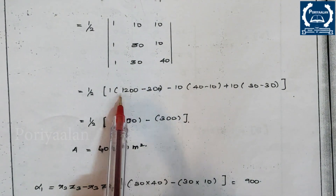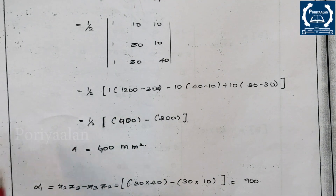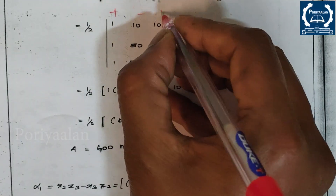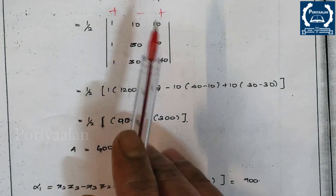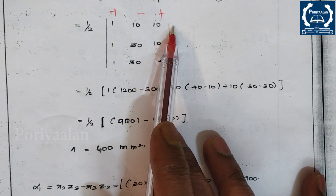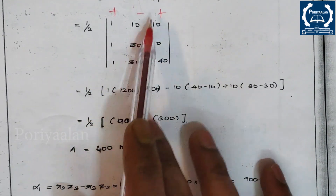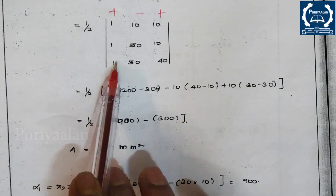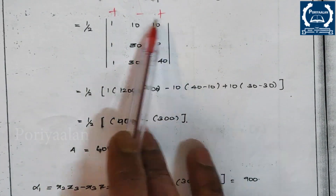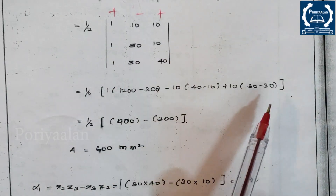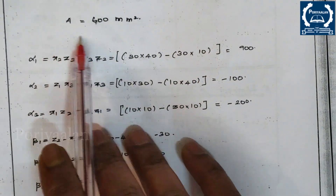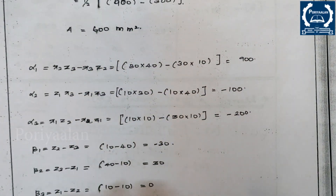For the first element: 30×40 − 30×10 = 1200 − 300. Then minus 10 times (1×40 − 1×10). Then plus, for the third element: 30 − 30. Substituting these values and computing, the area comes out to 600 mm².